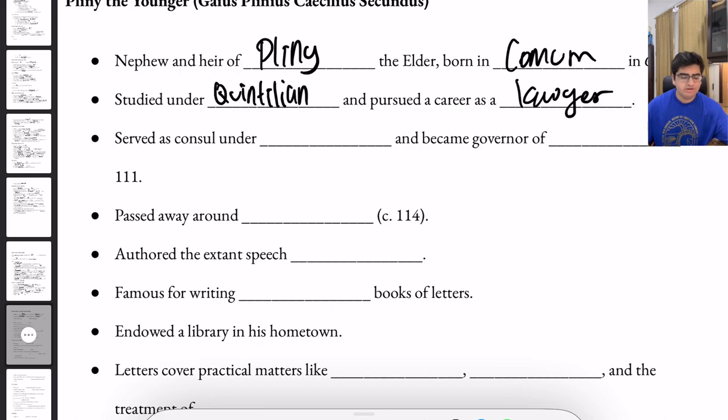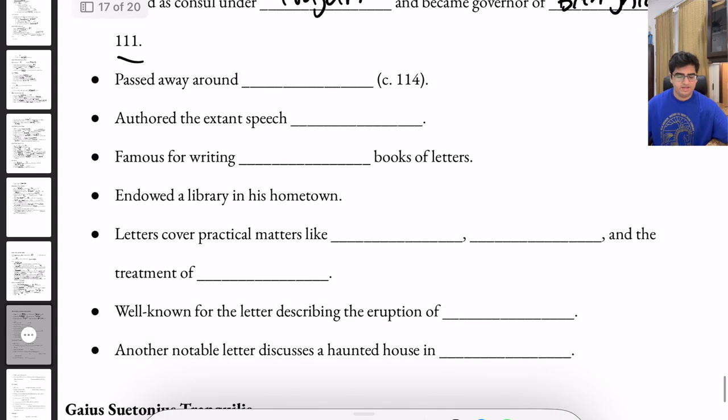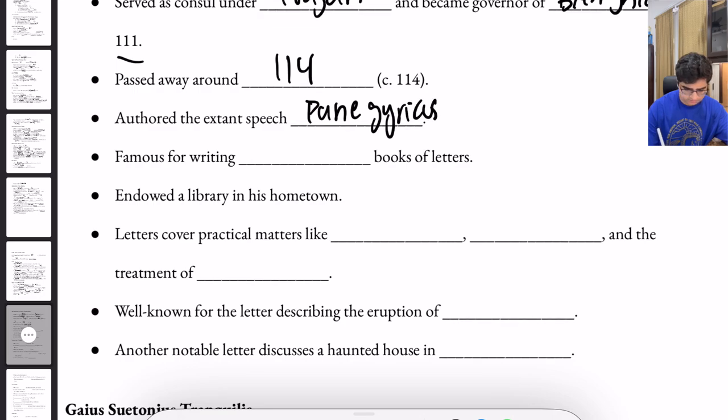He served as consul under Trajan and became the governor of Bithynia in 111. He passed around 114 A.D. He authored the extant speech, Panegyricus. He was famous for writing 10 books of letters.